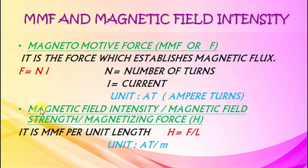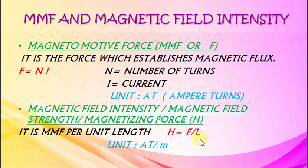Magnetic Field Intensity, also called Magnetic Field Strength or Magnetizing Force, is denoted by H. It is MMF per unit length. H equals F divided by L. The unit is Ampere turns per meter.